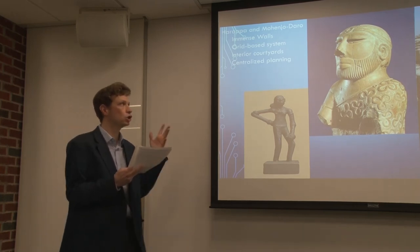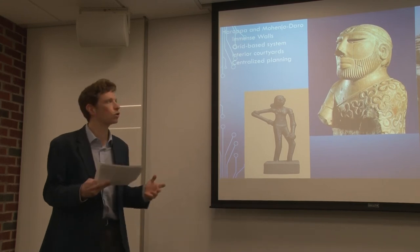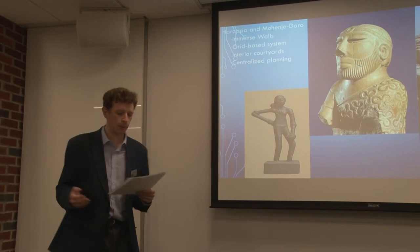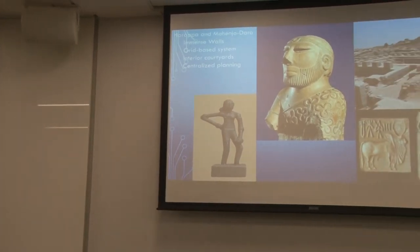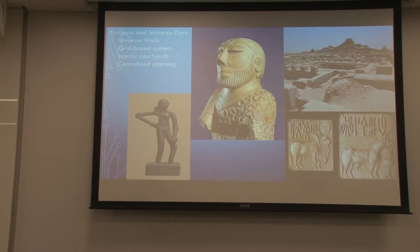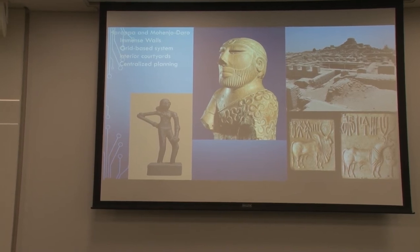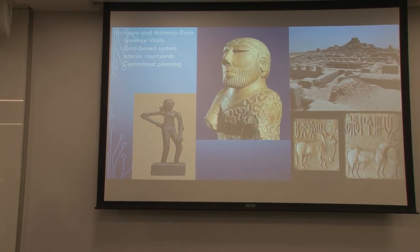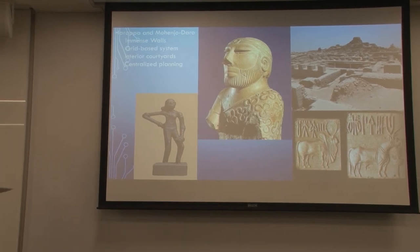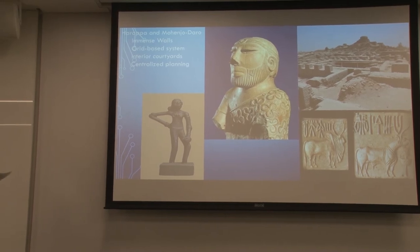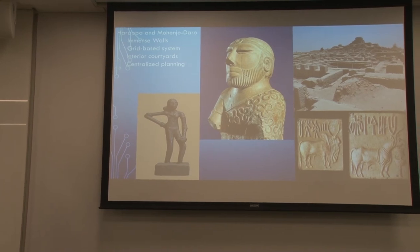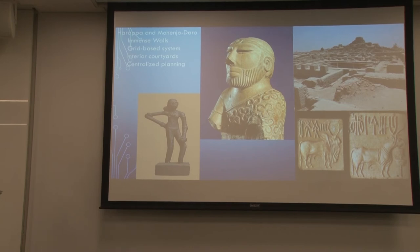We find a grid-based system of streets, interior courtyards and houses where most people spent their lives, and standardized systems of building bricks — bricks from one Harappan site are basically exactly the same measurements and specifications as those from other Harappan sites. This tells us it's a highly organized society with a genuine centralized plan. We also find granaries to the north of the city used to store surplus food for a population we estimate at somewhere between 30,000 and 50,000 inhabitants.